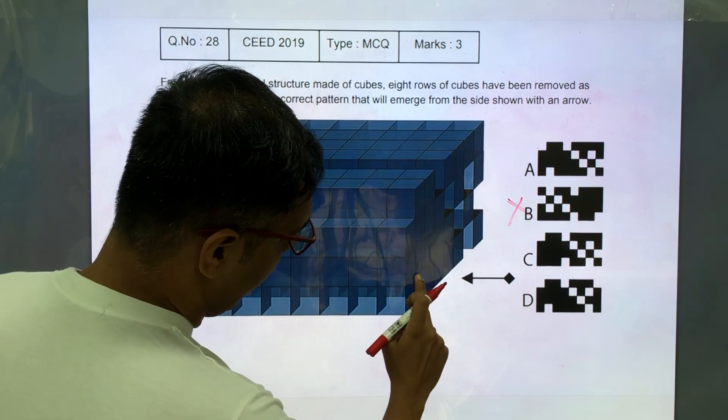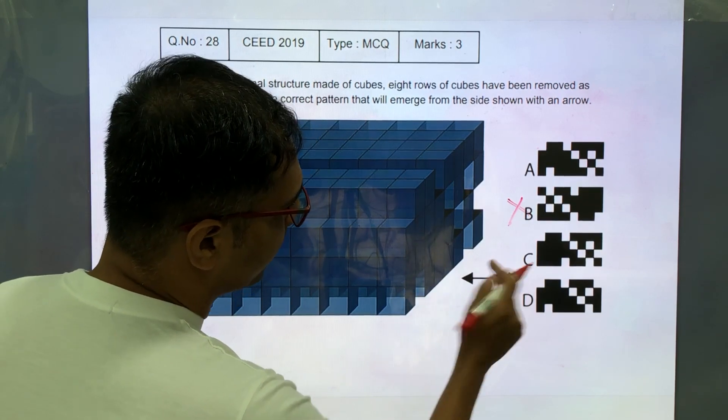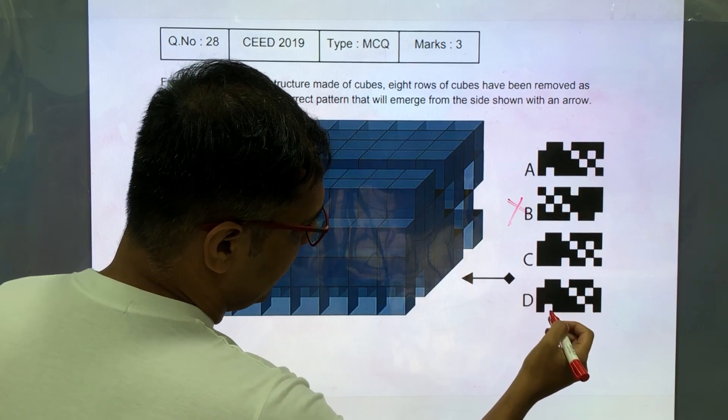The second column has a gap at the bottom which is seen in A and D.